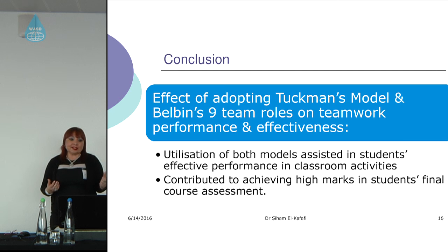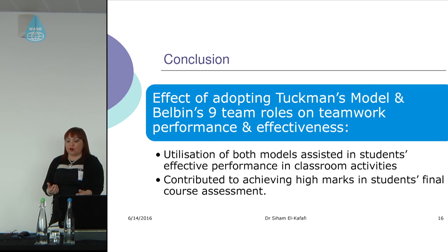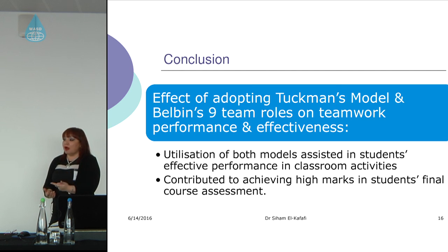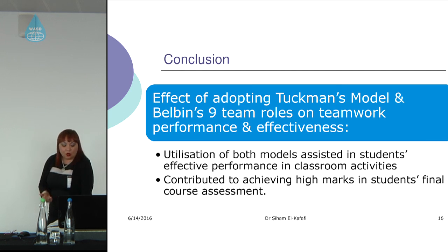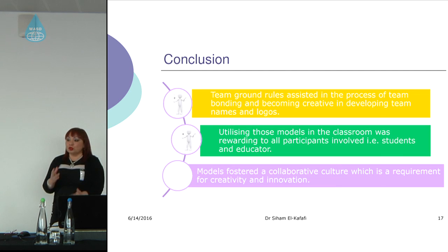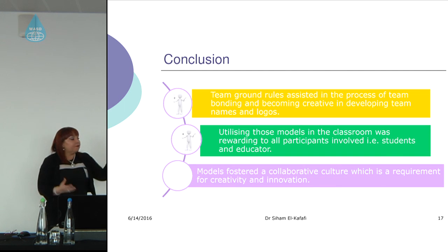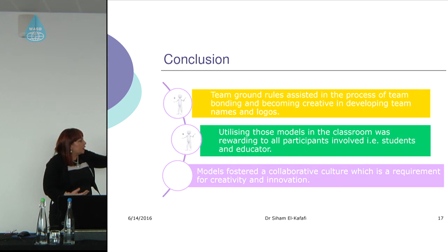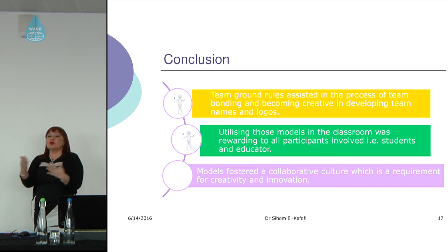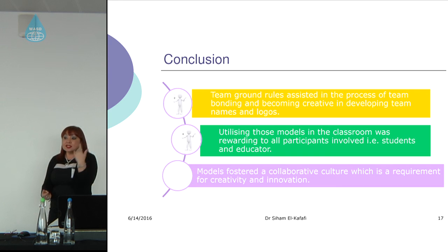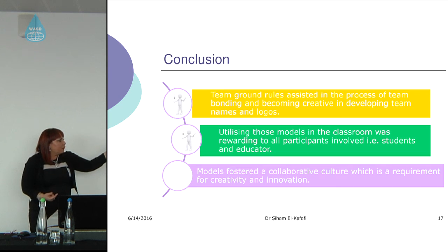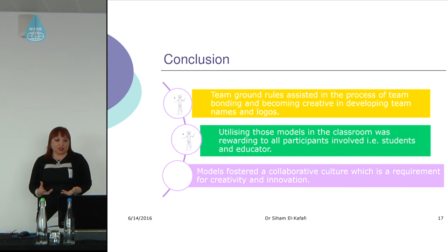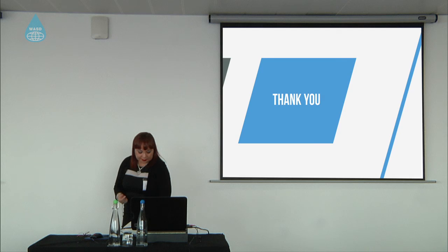In conclusion, the effect of adopting Tuchman's model and Belbin's nine team roles on teamwork performance and effectiveness showed the following results: first, utilization of both models assisted students in effective performance in their classroom activity; second, it contributed to achieving high marks in final course assessments; third, the team ground rules models helped achieve a smooth flow; and using those models was very rewarding for both students and the educator. The model fosters a collaborative culture among students. Thank you very much.